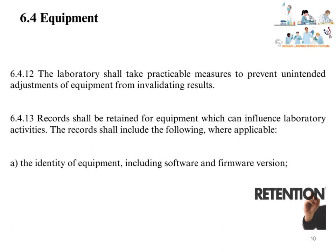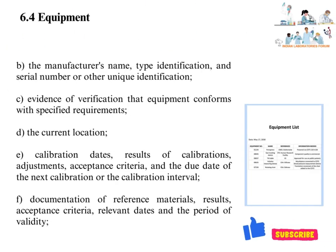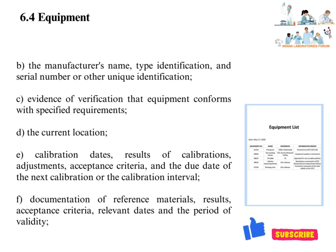Records shall be retained for equipment which can influence laboratory activities. Records shall include: the identity of equipment including software and firmware version; the manufacturer's name, type identification, and serial number or other unique identification — generally covered in a master list of equipment; and evidence of verification that equipment conforms with specified requirements, meaning IQ, OQ, and PQ data and records.